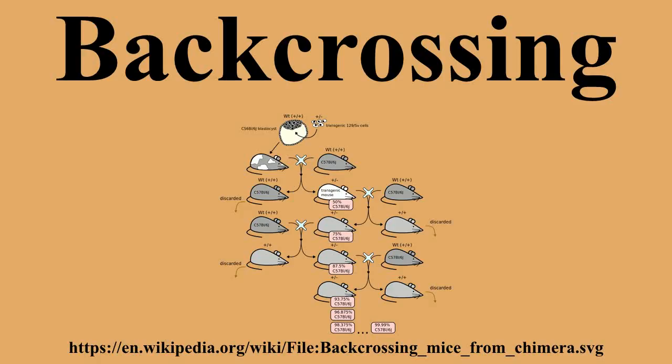In animals, back-crossing may be deliberately employed to transfer a desirable trait from an animal of inferior genetic background to an animal of preferable genetic background. In gene knockout experiments in particular, where the knockout is performed on easily cultured stem cell lines but is required in an animal with a different genetic background, the knockout animal is back-crossed against the animal of the required genetic background.